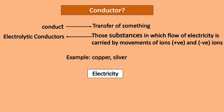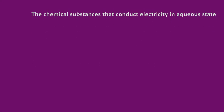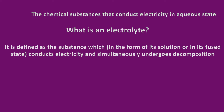In order to conduct electricity with the help of freely mobile and charged ions, we require a substance. That chemical substance which conducts electricity in an aqueous state is known as an electrolyte. It is defined as a substance which, in the form of its solution or in its molten state, conducts electricity and simultaneously undergoes decomposition. In other words, electrolytes are those chemical compounds that can break down into ions and conduct electricity throughout the aqueous solution.